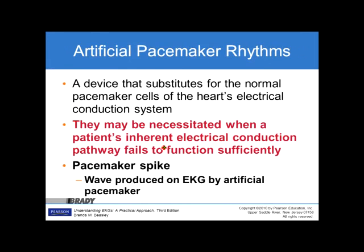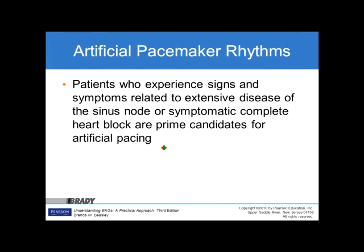An artificial pacemaker is a device that substitutes for the normal pacemaker cells of the heart's electrical conduction system. It may be necessitated when a patient's inherent electrical conduction pathways fail to function sufficiently. A pacemaker spike is a wave produced on the EKG by an artificial pacemaker. Patients who experience signs and symptoms related to extensive disease of the sinus node or symptomatic complete heart block are prime candidates for artificial pacing.